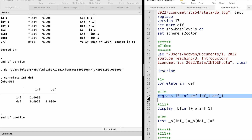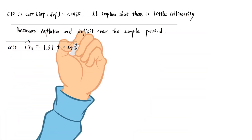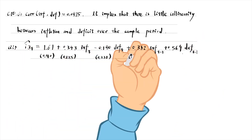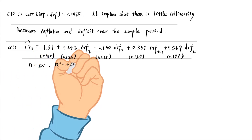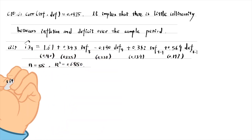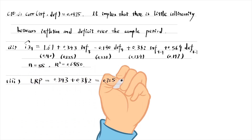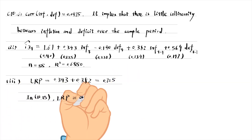The correlation is pretty small and implies there is little collinearity between inflation and deficit over the sample period. In part 2, we add the lags of inflation and deficit to the model. The long-run propensity for the effect of inflation is the sum of the coefficients on the inflation variable and its lag. It is 0.725, which is larger than that from equation 10.15.